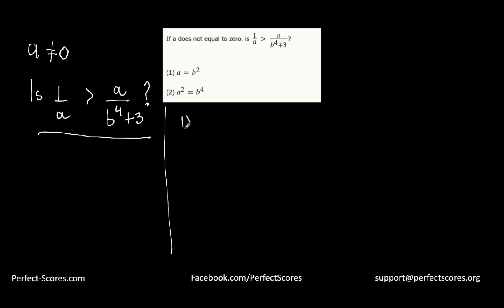The first statement says that a equals b squared. When a is the square of a number, that means a is definitely positive. Now if a is positive, I can actually cross multiply, so the question becomes: is b^4 + 3 greater than a^2?